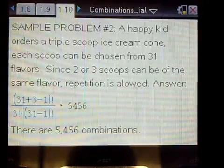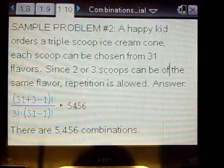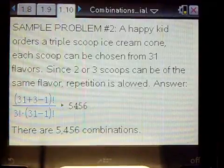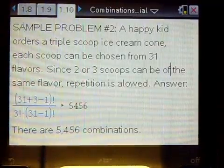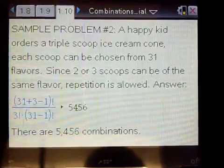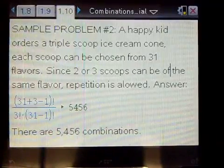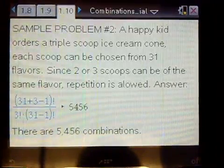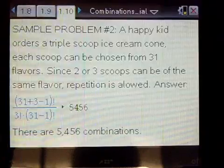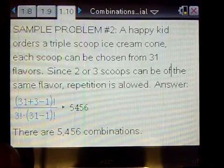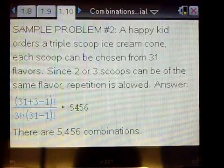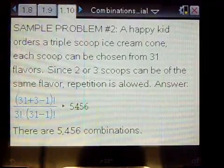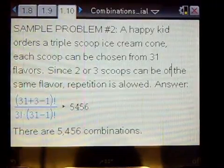In this problem, we have a happy kid going to the favorite ice cream parlor down the block and ordering a triple scoop ice cream cone, three scoops. And each of the scoops can be chosen from 31 different flavors. Now, in an ice cream cone, when you order a triple, you could have two or maybe all three scoops of the same flavor. So, repetition is allowed. So, the second formula applies. Here, with n being 31, the number of flavors, k is equal to 3, the number of scoops, we have 31 plus 3 minus 1 factorial over 3 factorial times 31 minus 1 factorial. And it turns out this kid can have a choice of 5,456 combinations.